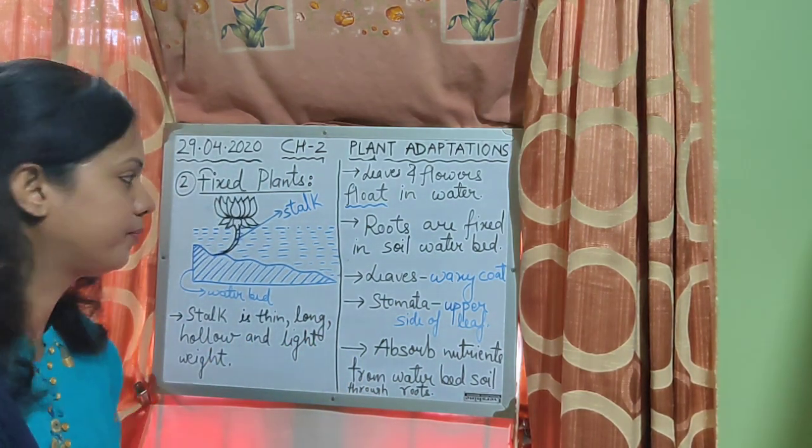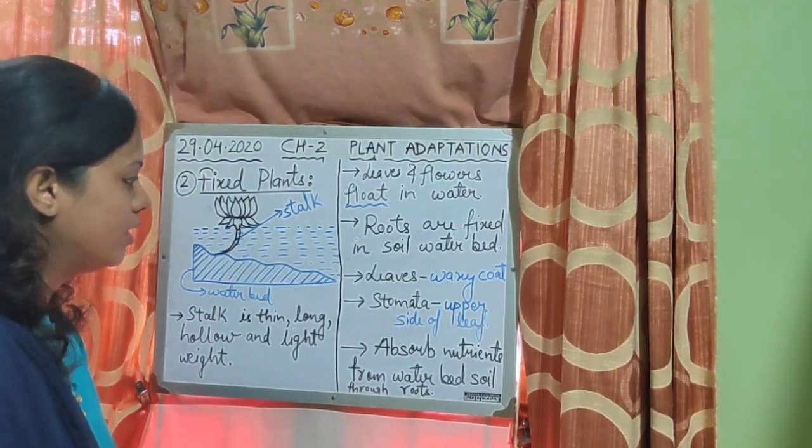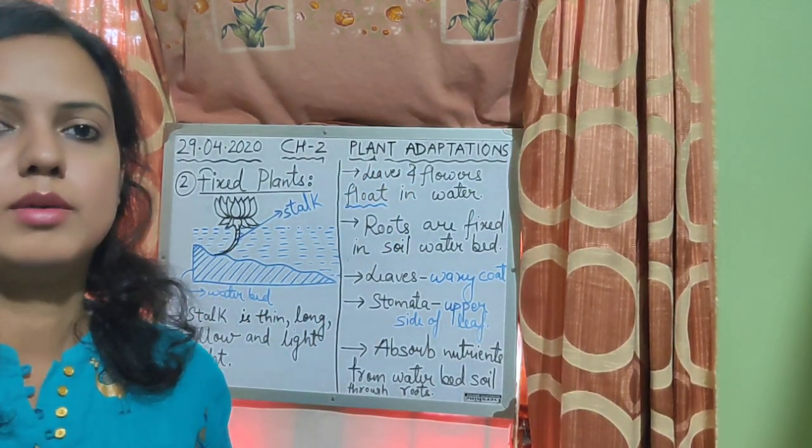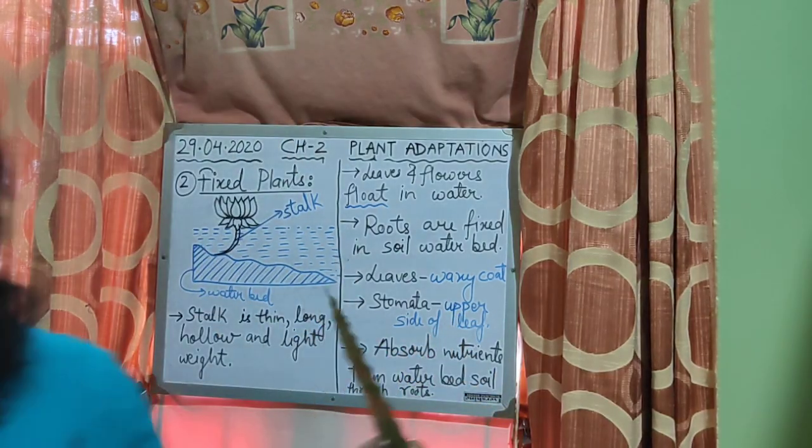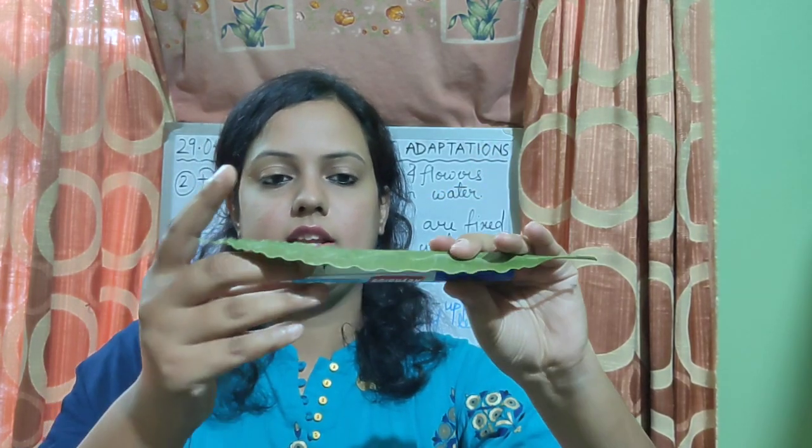Since leaves and flowers float in water, the leaves have a waxy coating on their outer surface. To prevent the leaves and flowers from getting wet, they have a waxy coating present on their outer surface.